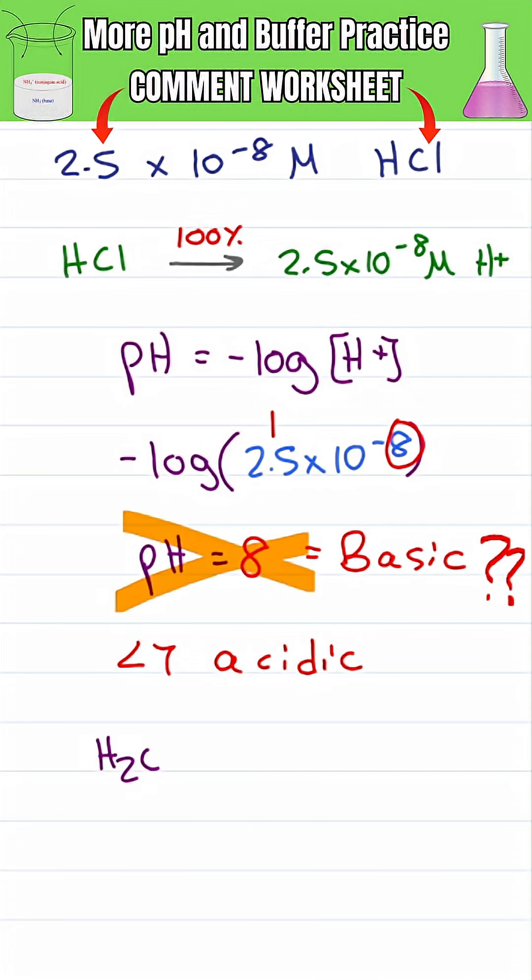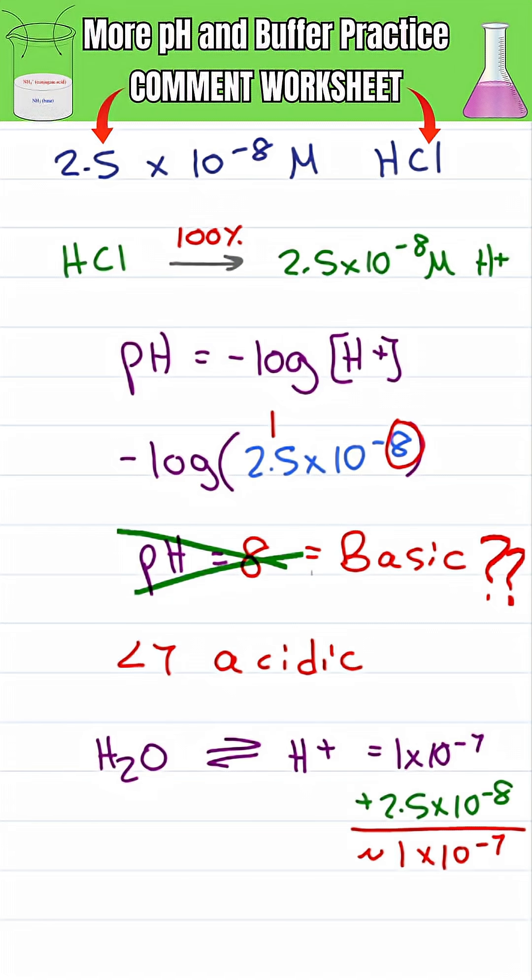If I add a tiny amount of a very strong acid to a solution of water that already has an H plus concentration of 1 times 10 to the minus 7, we raise the H plus by a tiny amount and so my solution won't be basic. Instead it'll be slightly more acidic.